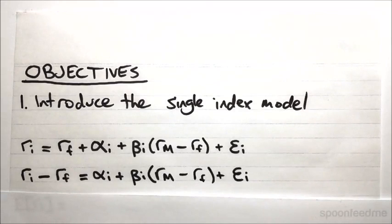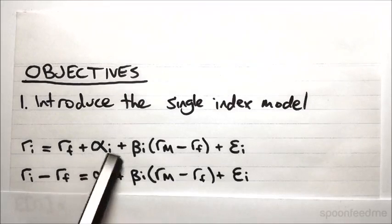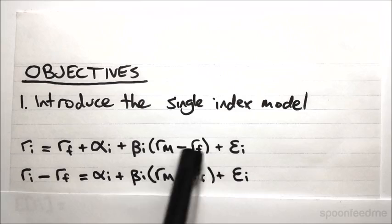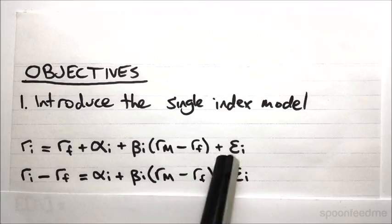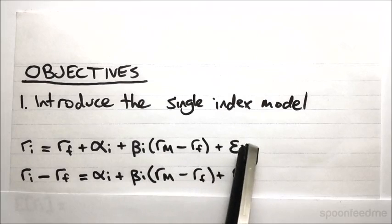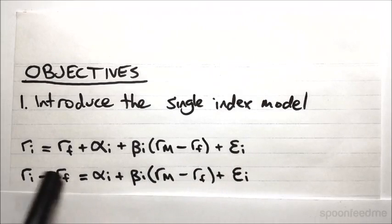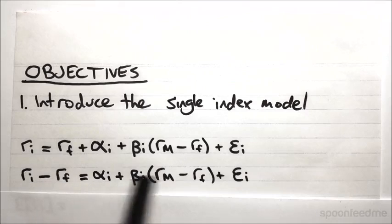It is the return on the risk-free asset, plus what we call the alpha of the asset, plus its beta multiplied by the excess return on the market, plus this epsilon term. You can alternatively express this as the excess return on the asset being all this.